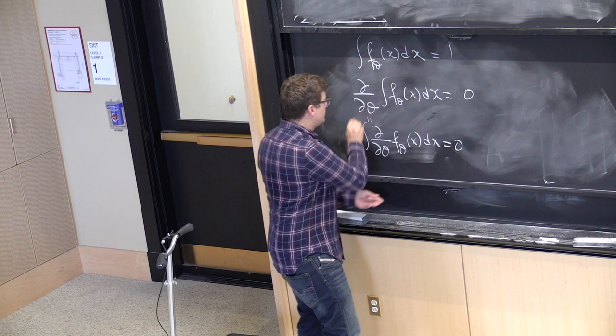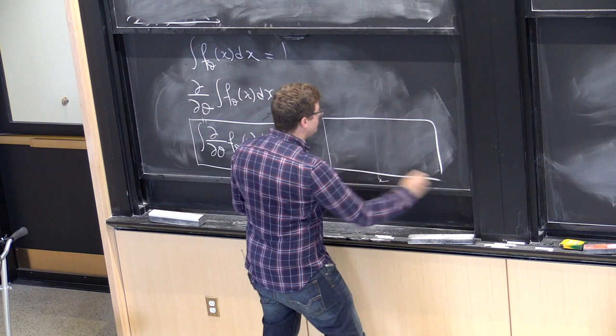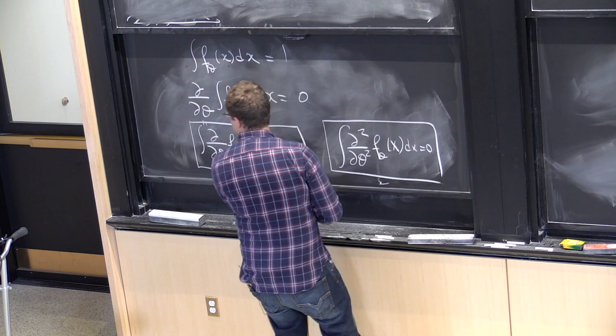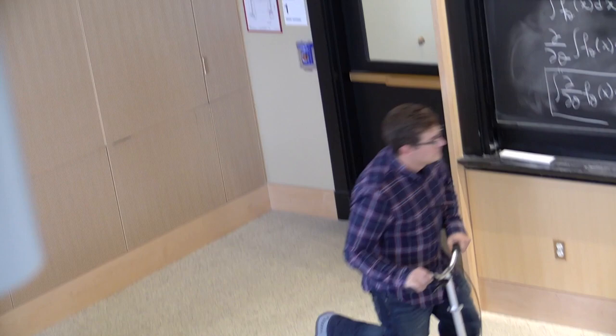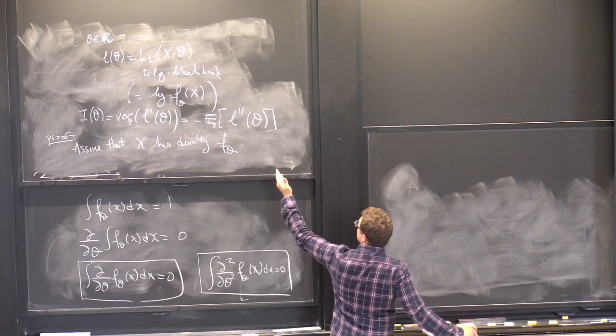If it's true for the first derivative, it's going to be true for the second derivative. So the second thing I'll use is that the integral of the second derivative of f theta is also equal to 0. Now let's start from the expectation of the second derivative of L of theta.